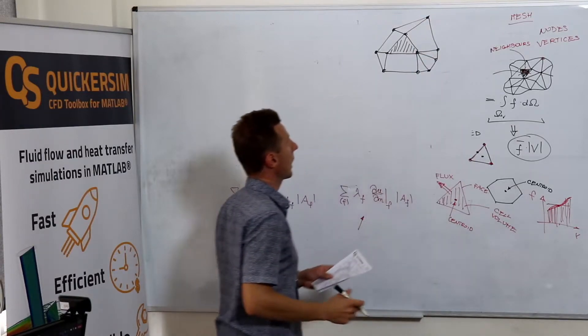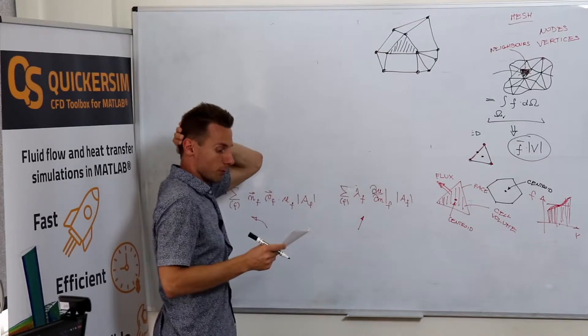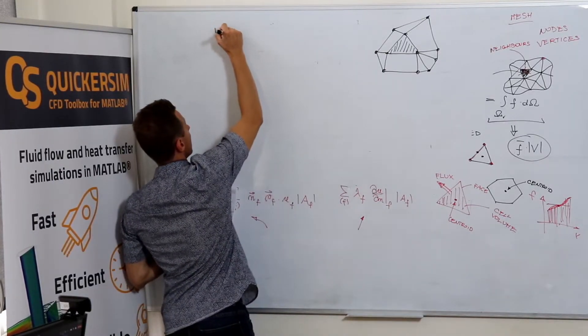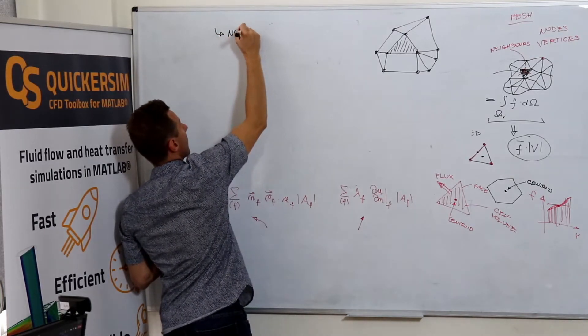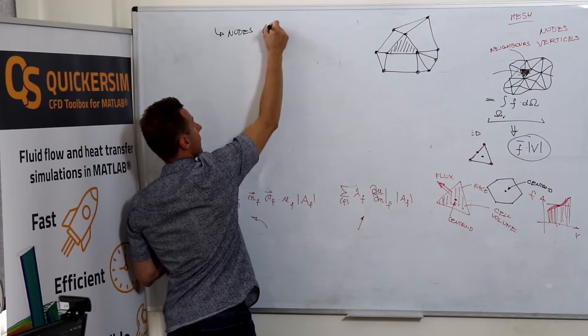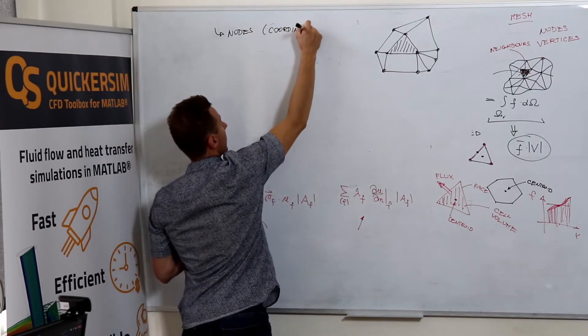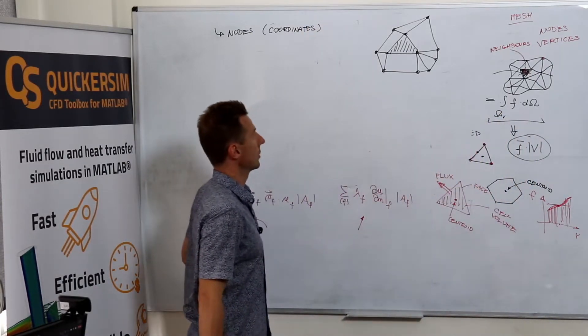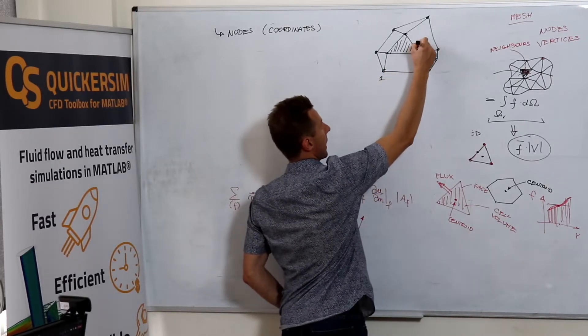Now, let's think for a while how to generate the data structures for the finite volume method. First of all, what you want to have is the array that stores the nodes. And nodes, I mean mainly the coordinates. So what you first do is you need to number the nodes somehow.